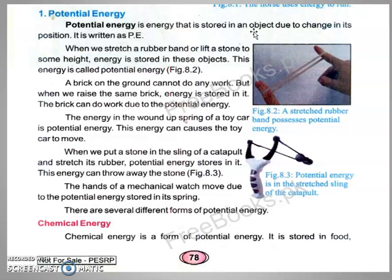Potential energy is energy that is stored in an object due to a change in its position. It is written as P.E. — capital P with a dot, then capital E. When we stretch a rubber band and lift a stone to some height, energy is stored in these objects. This energy is called potential energy.